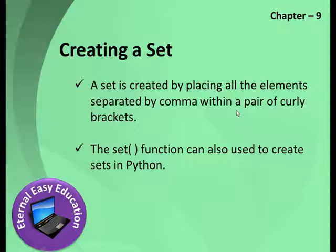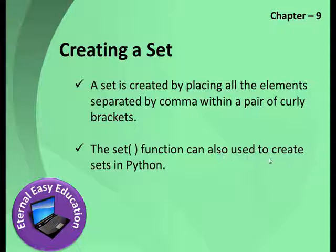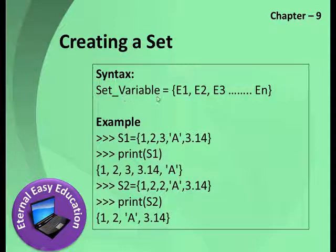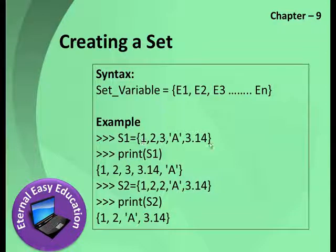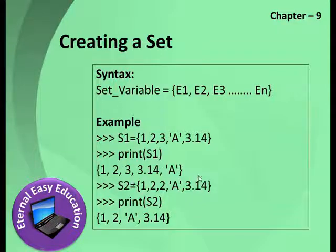How to create a set: a set is created by placing all the elements, separated by commas, within a pair of curly brackets. The set() function can also be used to create sets in Python. The syntax is: set_variable = {elements}. For example, a set can contain 1, 2, 3, 'a', and 3.14 — a collection of different data types. A list is enclosed within square brackets, a tuple within parentheses, and a set within curly braces.